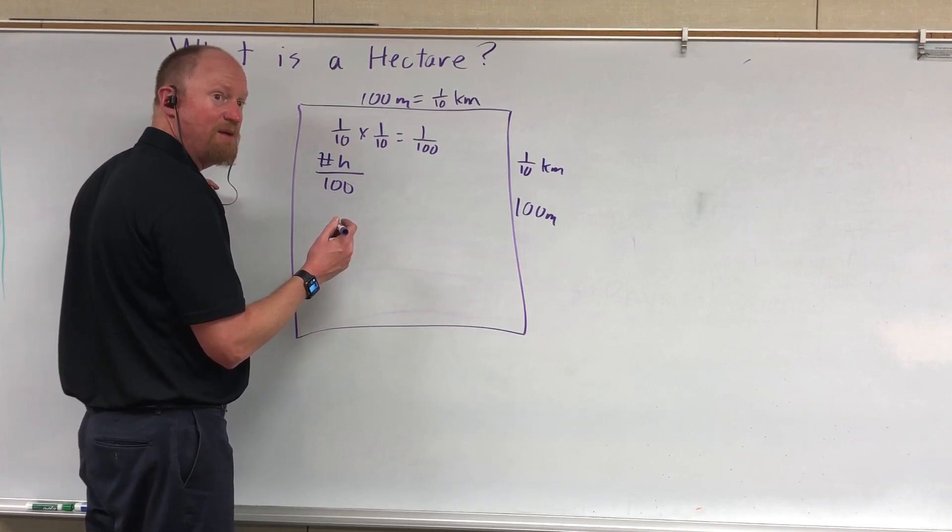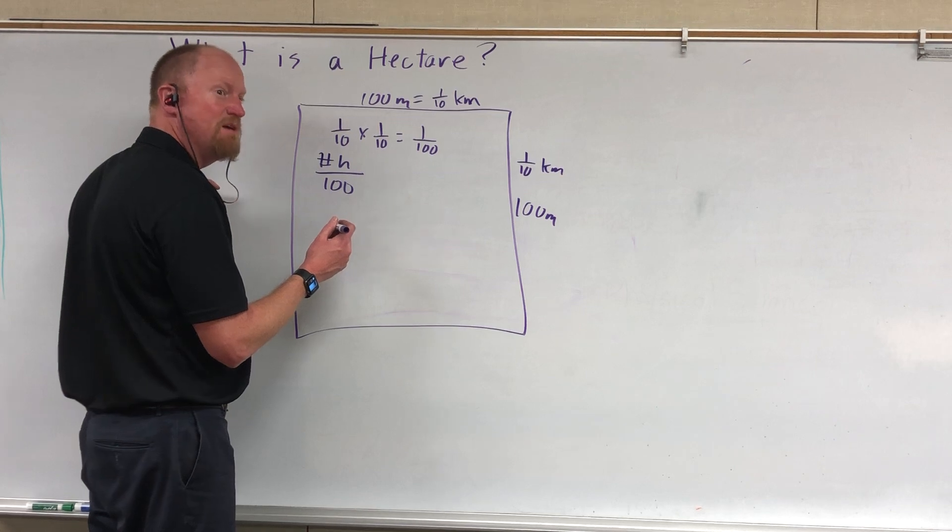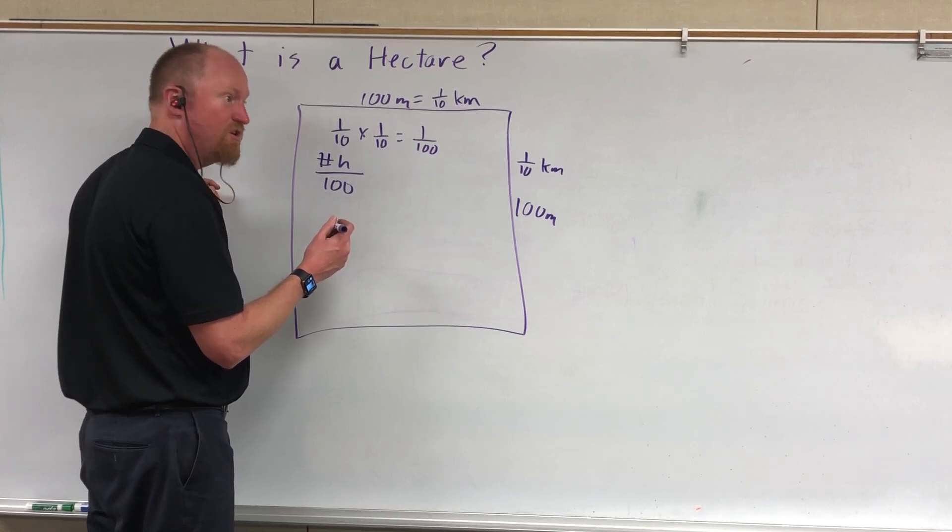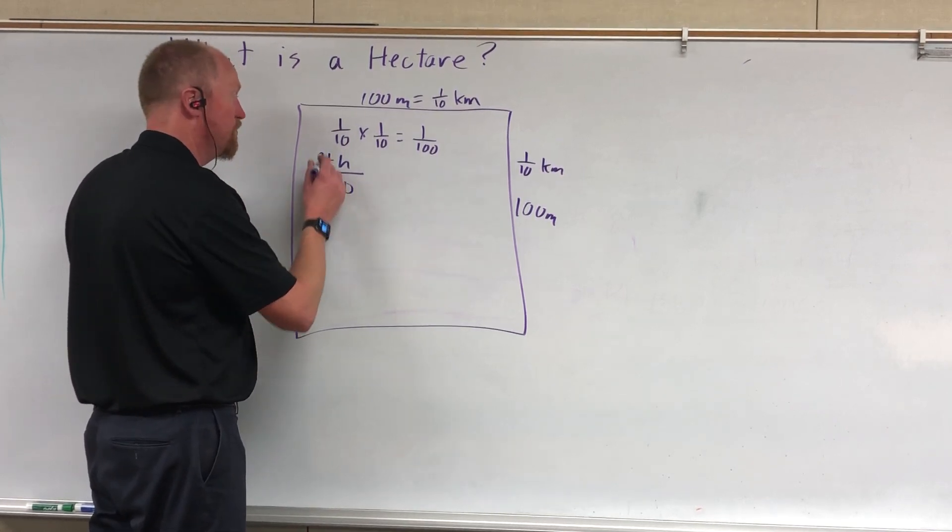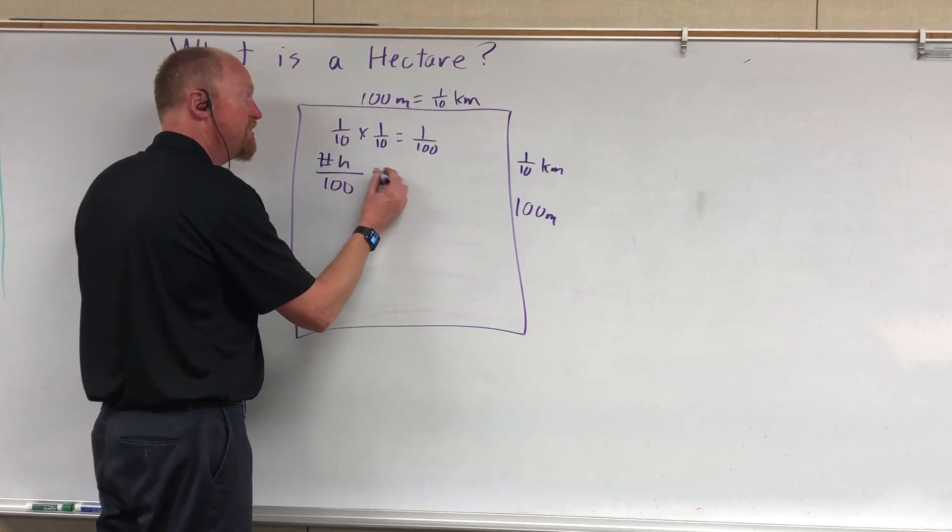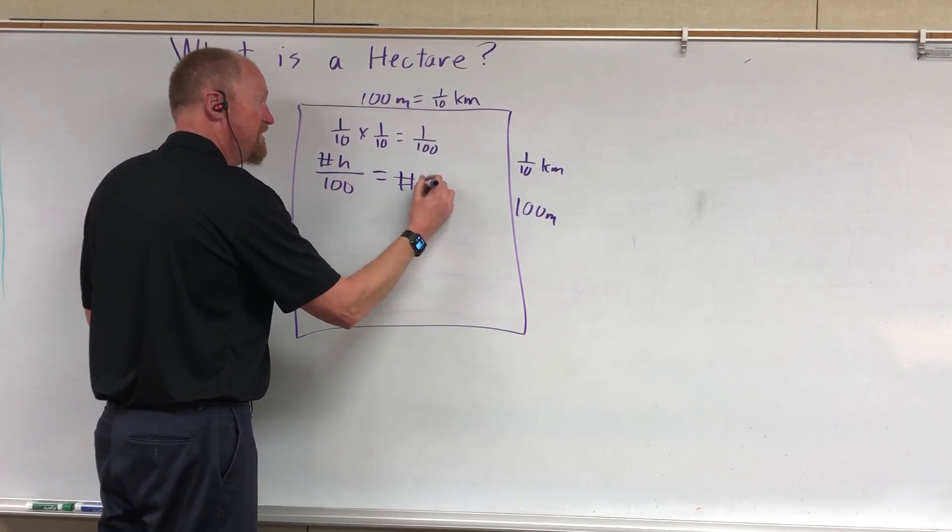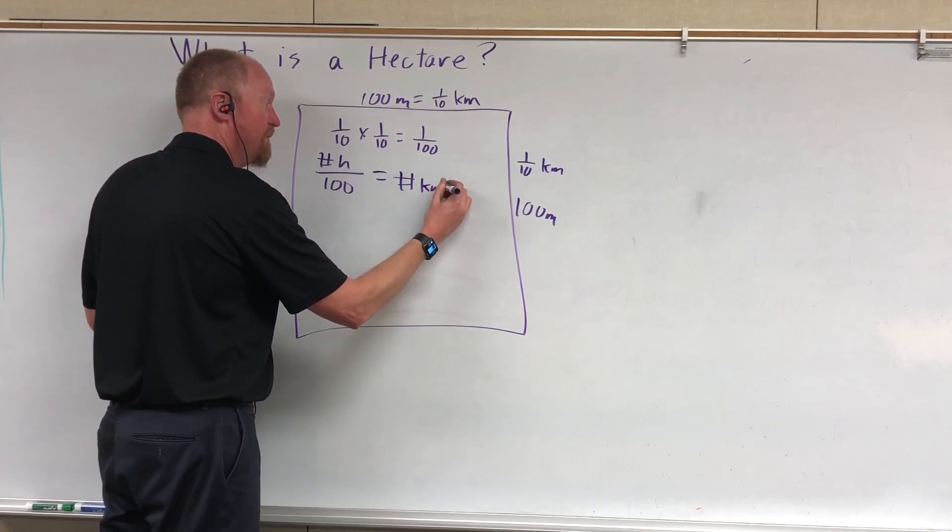You might hear a lot of people talking about having a couple hectares of land, but if someone's talking about having square kilometers, they're having a lot more land. So the number of hectares divided by a hundred is going to equal the number of kilometers squared.